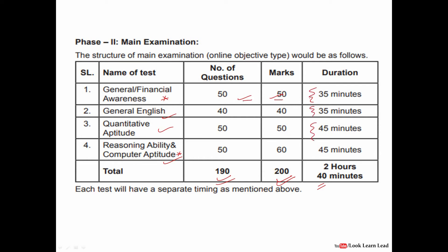For general awareness there are 50 questions for 50 marks with a 35-minute sectional time limit. English has 40 questions for 40 marks. Quant has 50 questions for 50 marks. Reasoning ability and computer aptitude has 50 questions for 60 marks, with 45 minutes allotted — sectional timing applies to all sections.